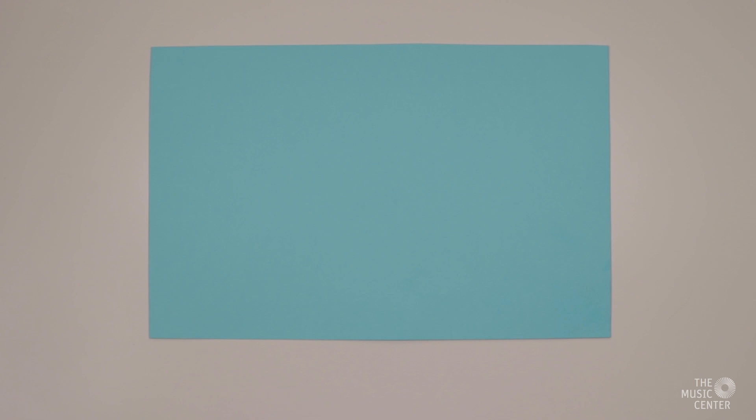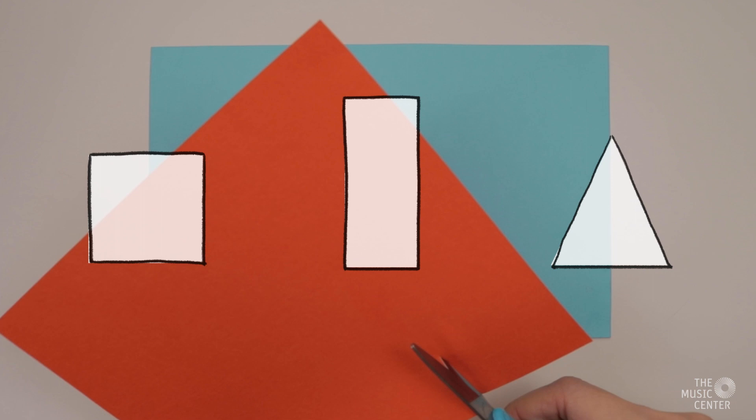For this first round, choose one of your colored papers to use as a background. We'll cut or tear squares, rectangles, and triangles out of one of our other colored pieces of paper. You can participate along with me or you can try this at your own pace afterwards.